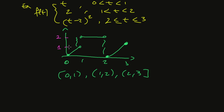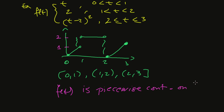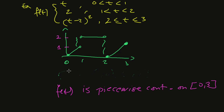So there is a jump discontinuity but the left and right limits are both finite. In this case we can say that f of t is piecewise continuous on the interval 0 to 3.